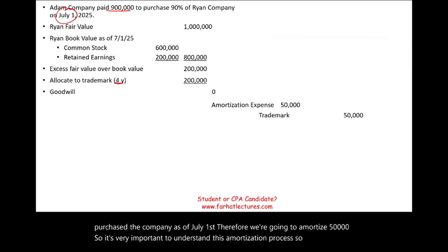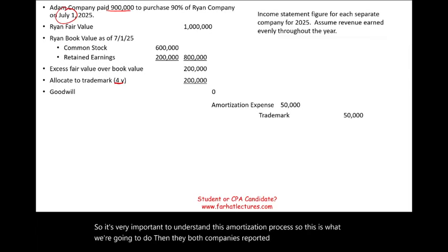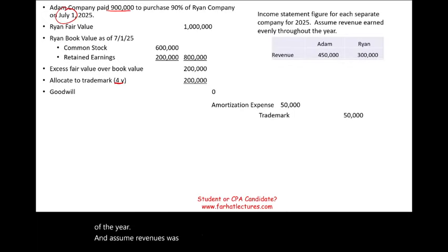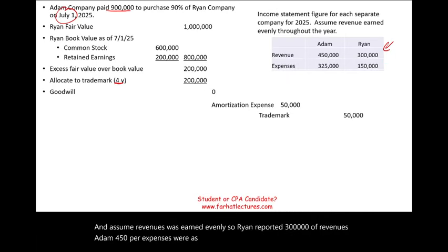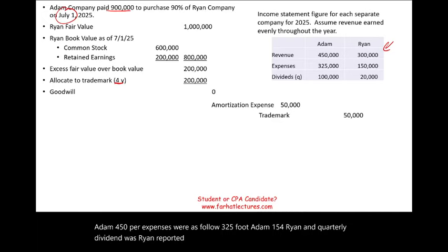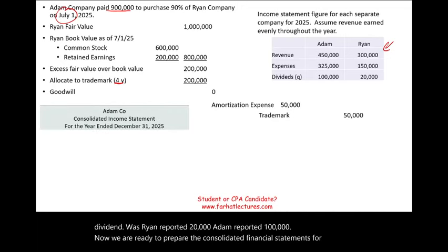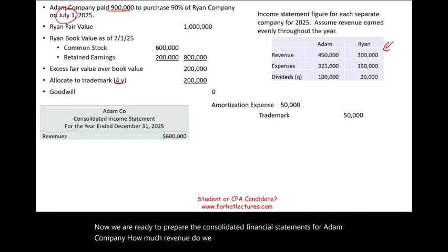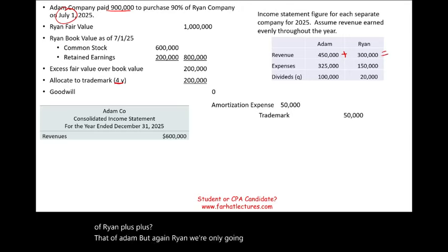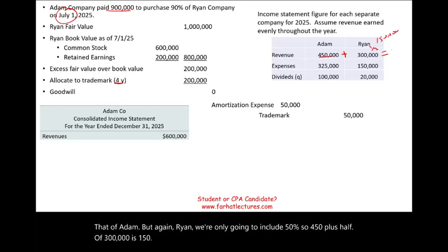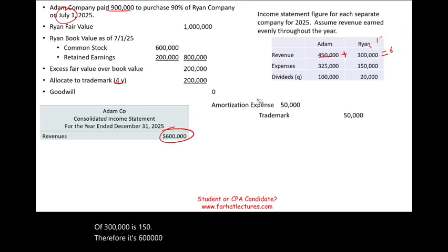Both companies reported income at the end of the year, and revenues were assumed to be earned evenly. Ryan reported $300,000 of revenues; Adam reported $450,000. For consolidated revenues, we include Adam's full $450,000 plus only 50% of Ryan's $300,000, which is $150,000, giving consolidated revenues of $600,000.